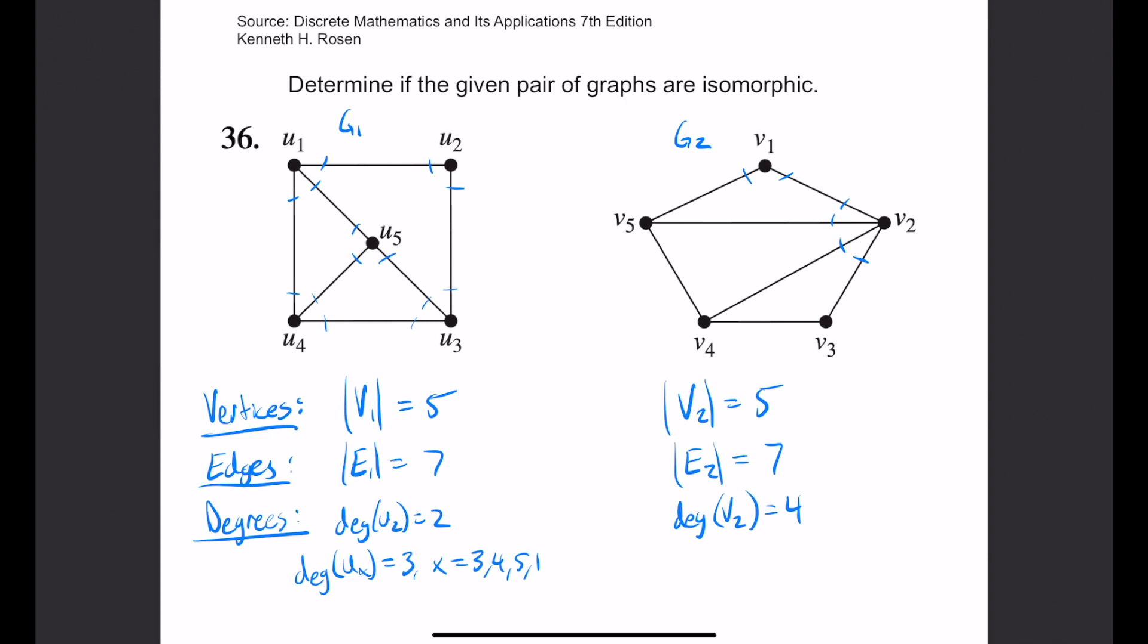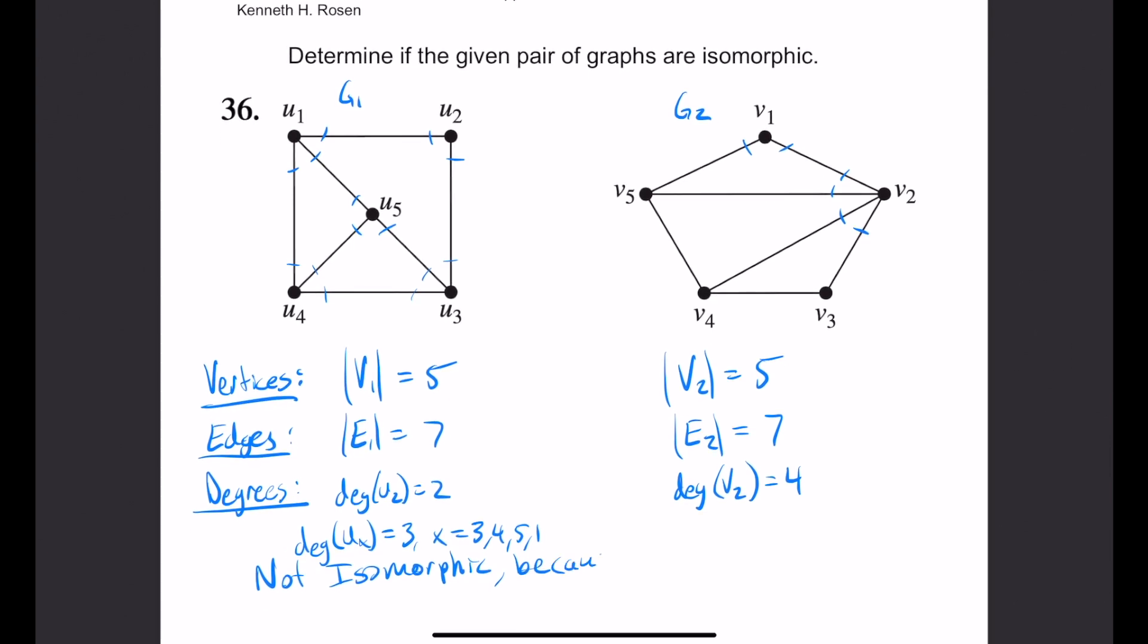Therefore, these two graphs are not isomorphic because G2 has a vertex with a degree of 4 and G1 does not.